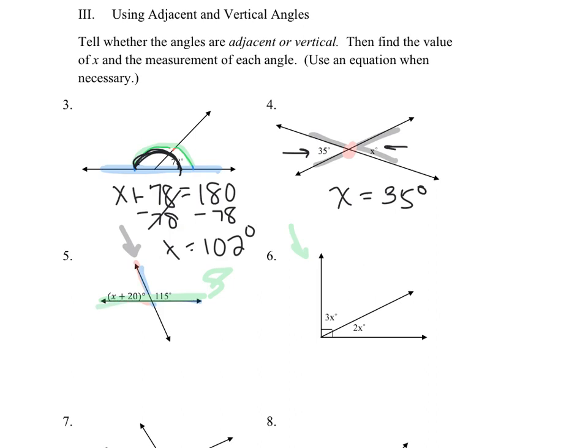So I'm going to take X plus 20 plus the 115. So X plus 20 plus 115 and they are going to create 180 degrees. So I just made an equation based on that information. So you get X plus 135, because we're going to combine like terms, equals 180.